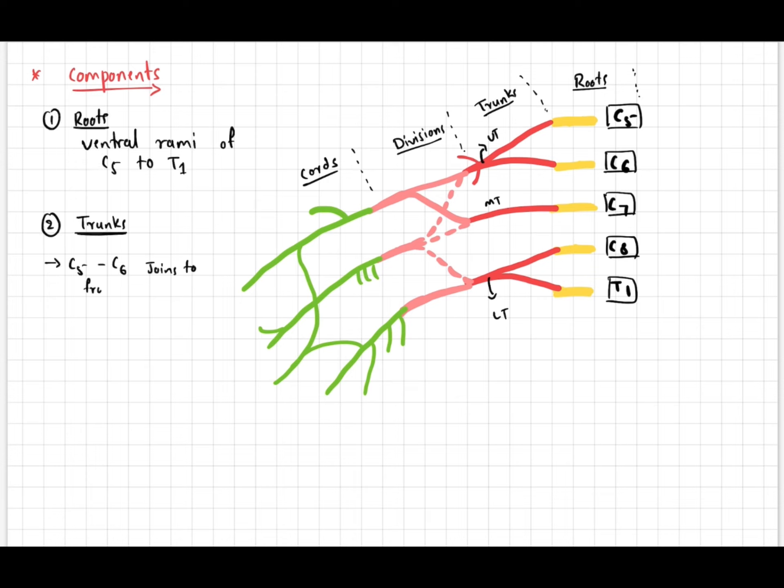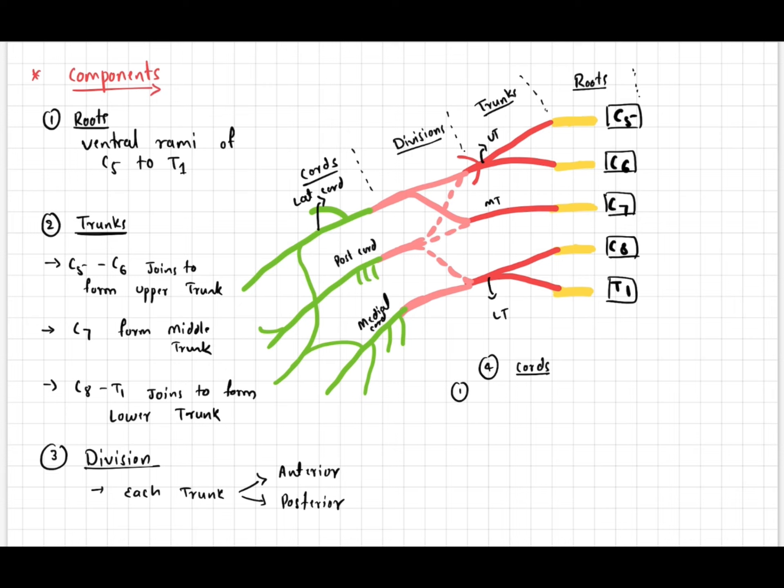Divisions: Each trunk will be divided into anterior and posterior division. Cords: Anterior divisions of the upper and middle trunk unite to form the lateral cord. The anterior division of the lower trunk forms the medial cord, and the posterior divisions of all three trunks unite to form the posterior cord.